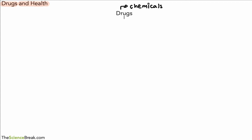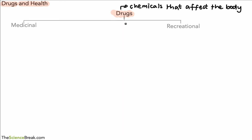The first thing to do is to define what we mean by drugs — these are chemicals that affect the way the body works. We can split these up into two main types: medicinal drugs, shown on the left, and recreational drugs, shown on the right.